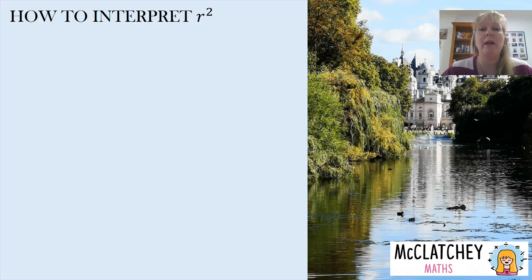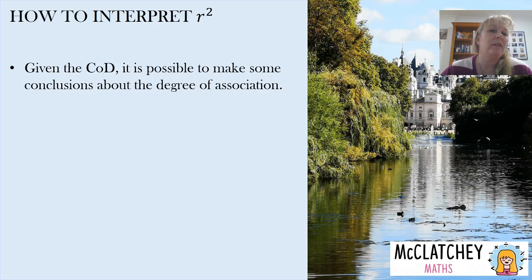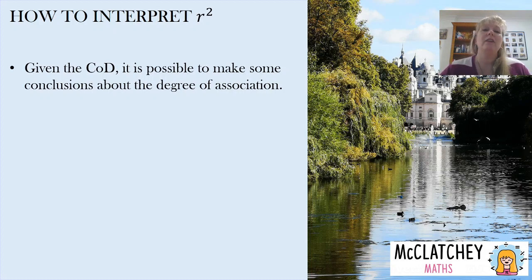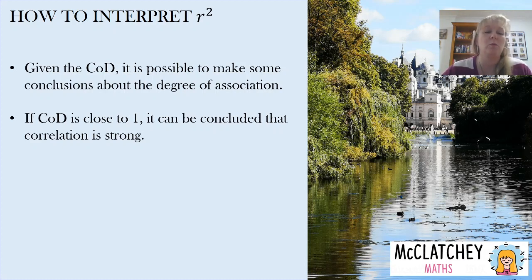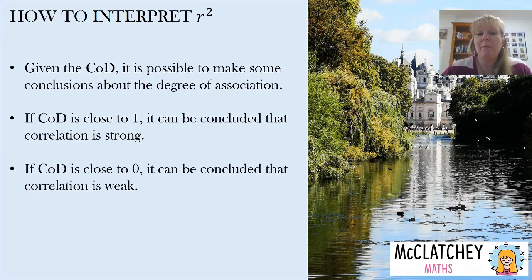There are different ways we can interpret R squared. When we're given the coefficient of determination, we can make some conclusions about the degree of association. A lot of people think R squared is all about the strength of correlation, but that's not fully understanding what R squared means. If the coefficient of determination is close to 1, you could conclude the correlation was very strong. If it's close to 0, you could conclude the correlation was weak. But the coefficient of determination is so much more than just degree of association — it does hint towards it, but that's not all COD is about.